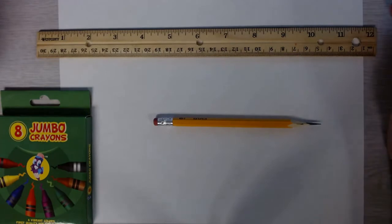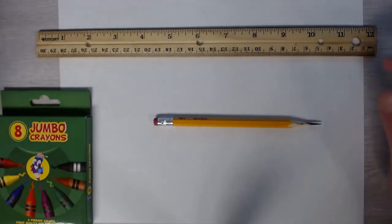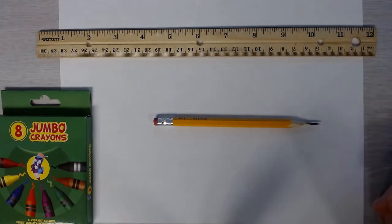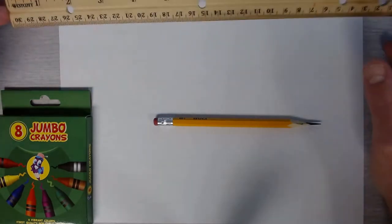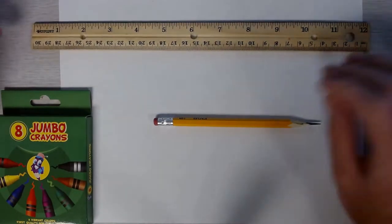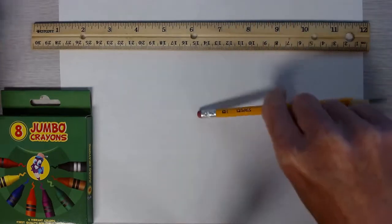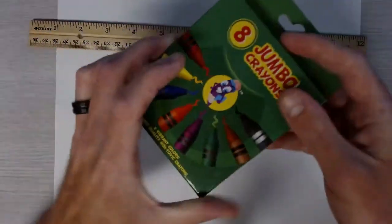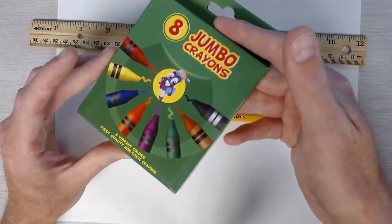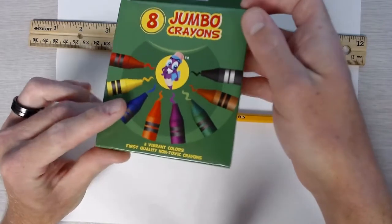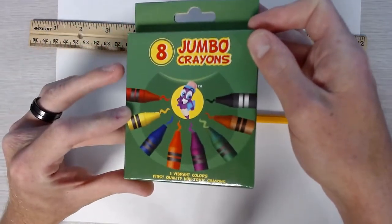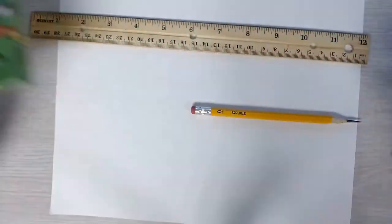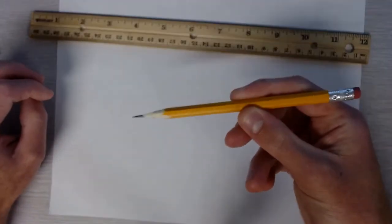So what we're going to be doing today is combining all those things together to make an optical illusion artwork. So what you're going to need: you're going to need a ruler, you're going to need a pencil, and as an optional bonus you can use crayons or markers to color with. Now if you don't want to color this artwork and just want to leave it black and white, that's perfectly fine. All you need is a pencil.